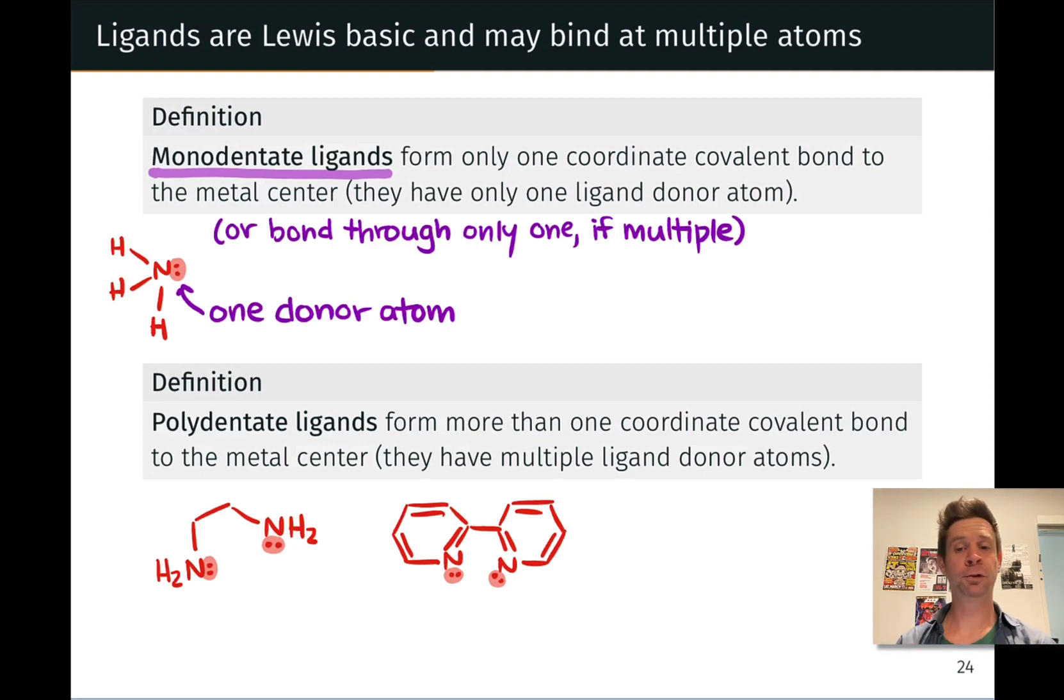So they have multiple ligand donor atoms, and two examples are shown here. This on the left is ethylenediamine, we looked at that previously, and bipyridine is another important example of a bidentate ligand with two ligand donor atoms. These two nitrogens bearing the lone pairs. Keep in mind, it's these lone pairs that are actually donated to create the dative bonds to the metal center.